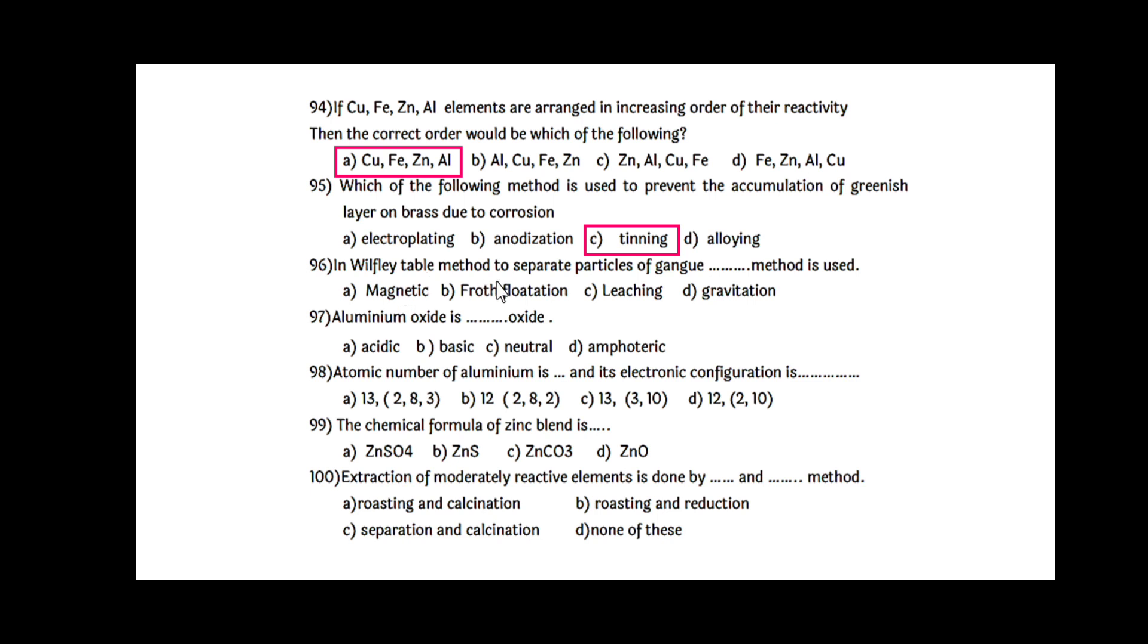In Wilflem table method, to separate particles of ore, gravitation method is used. Aluminum oxide is amphoteric oxide. It is having both nature, that is amphoteric.